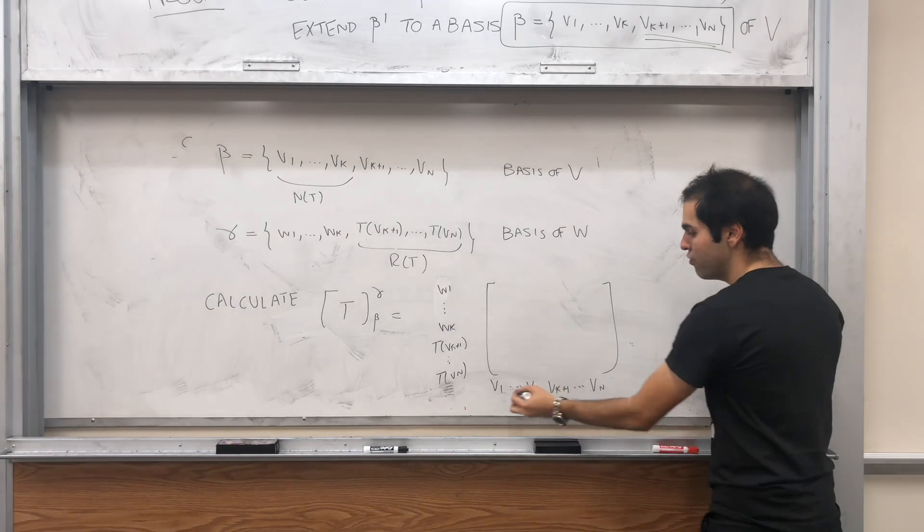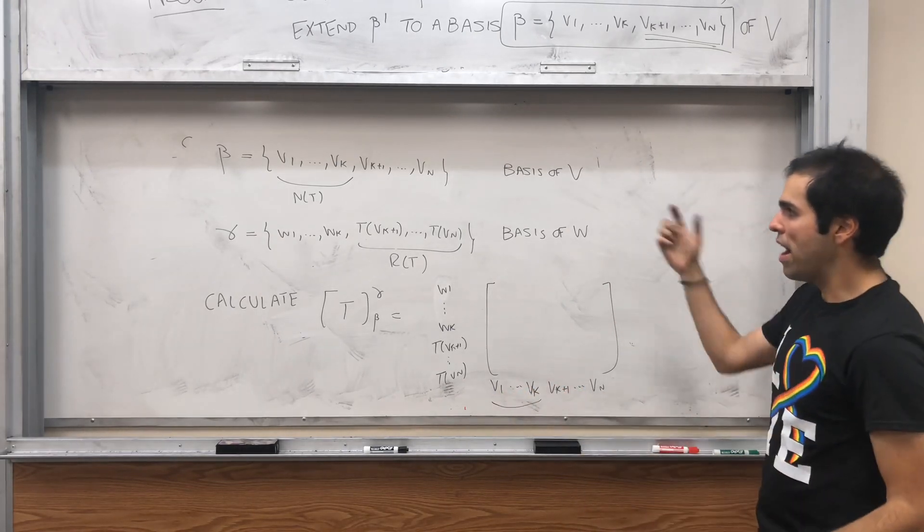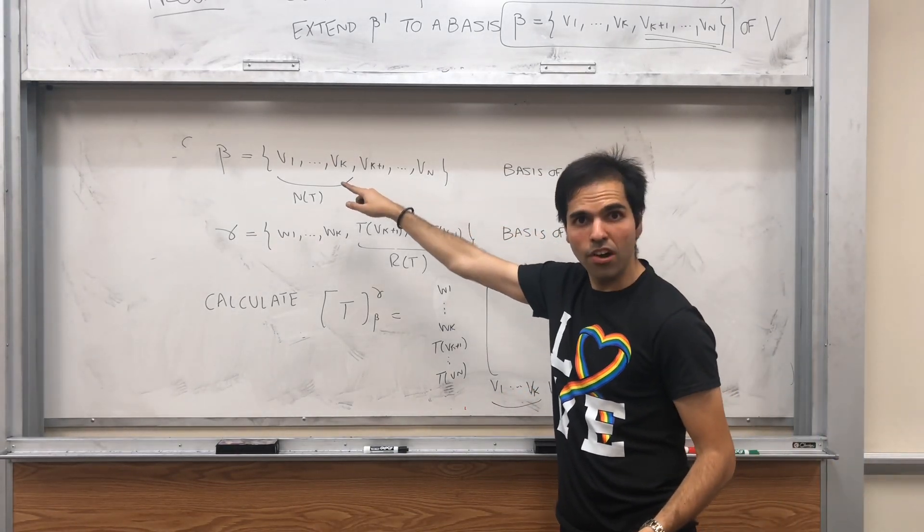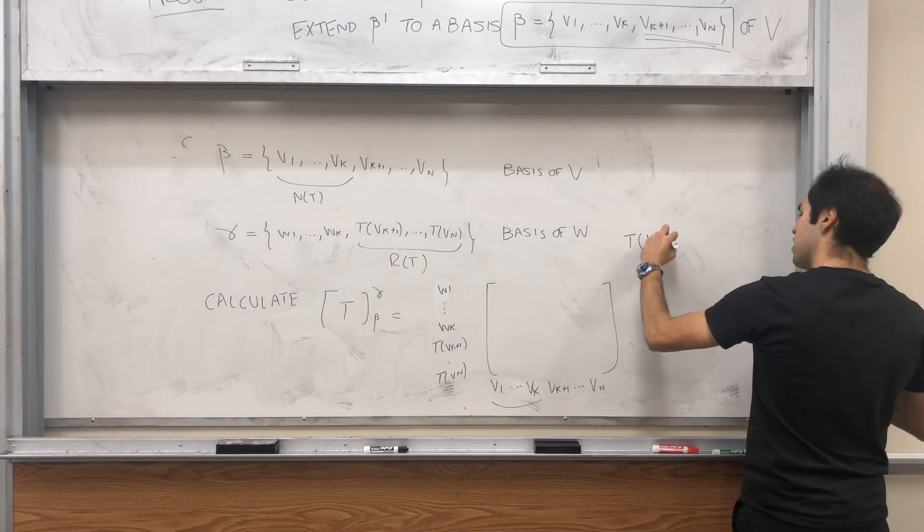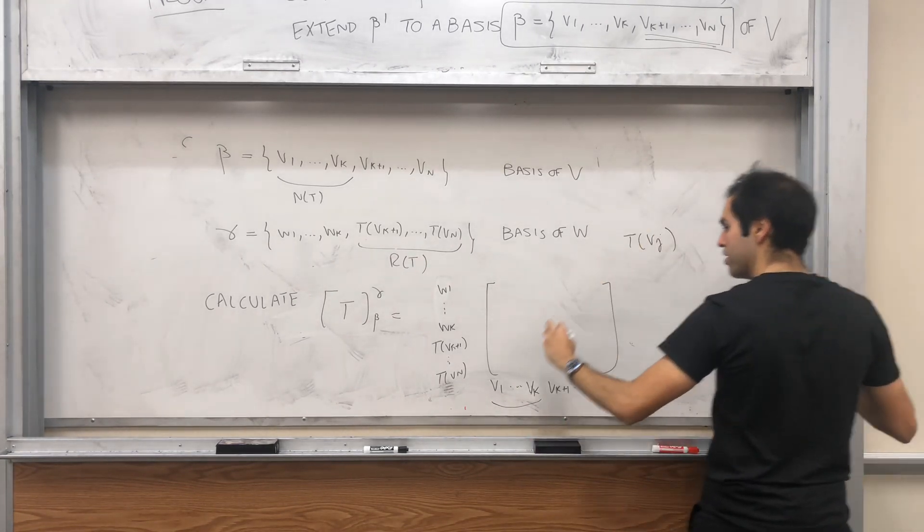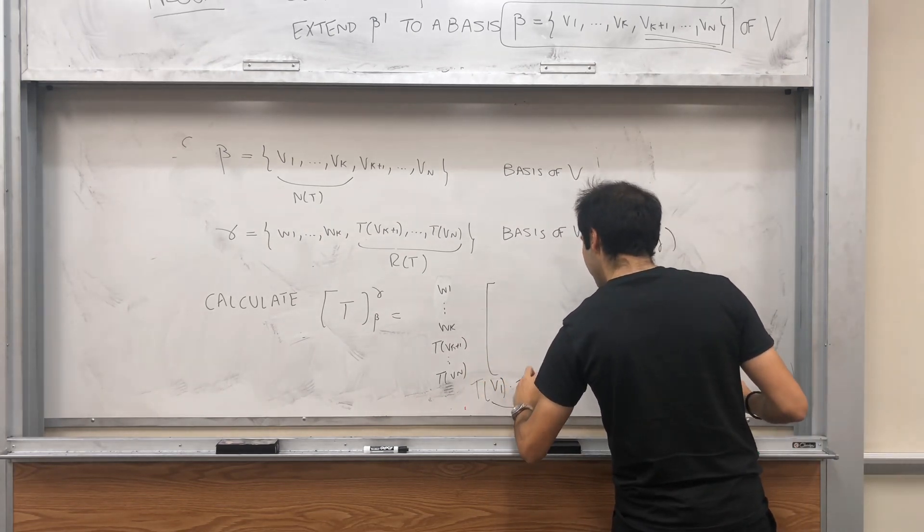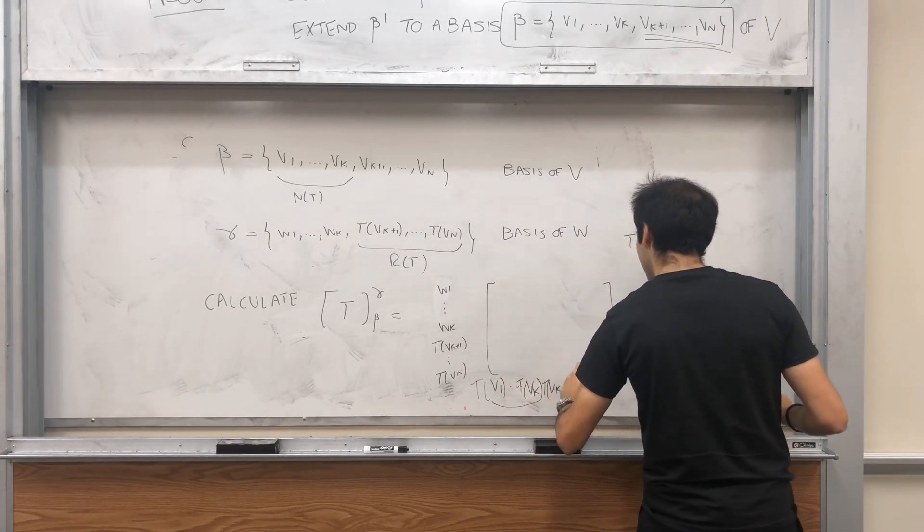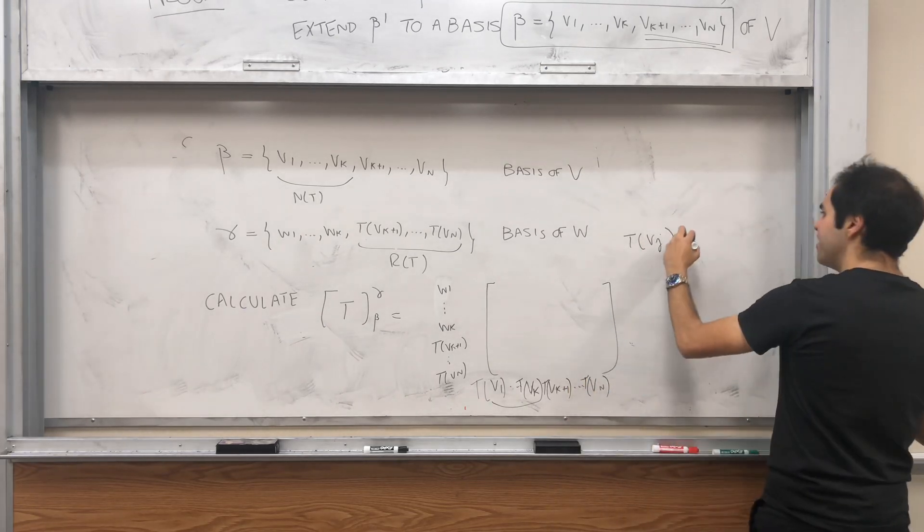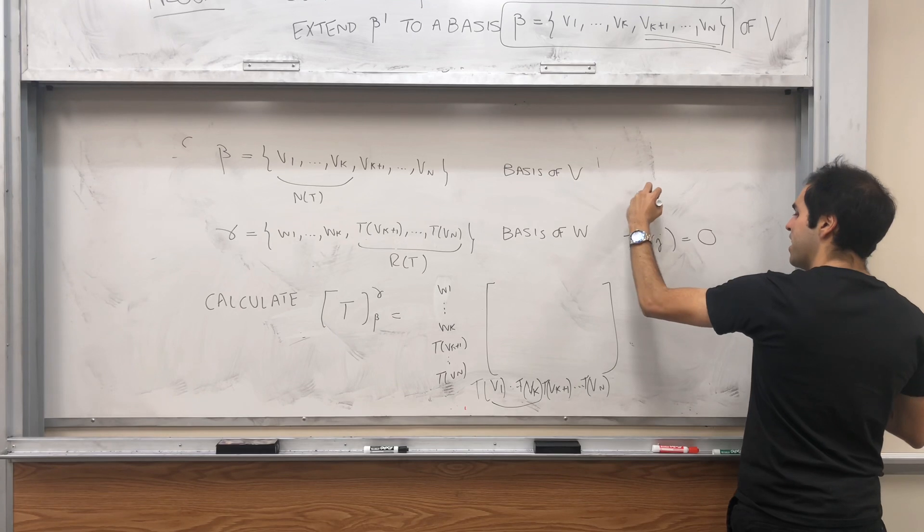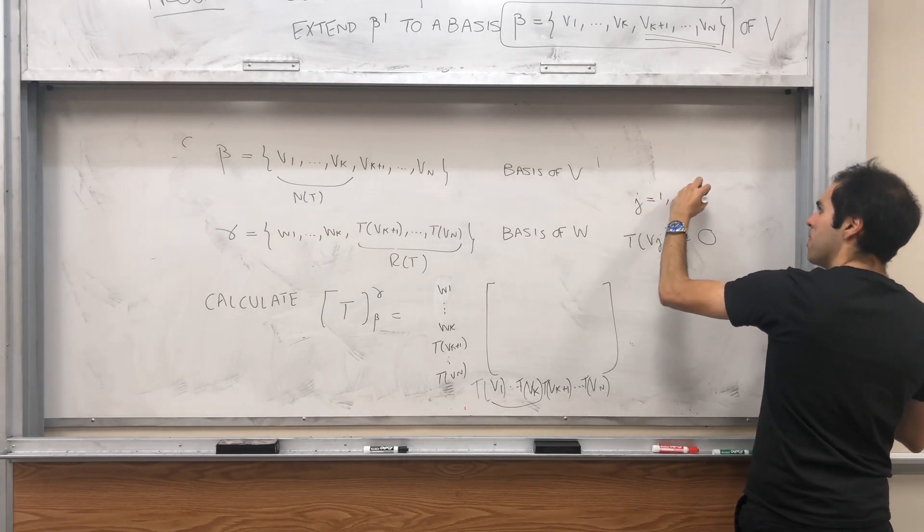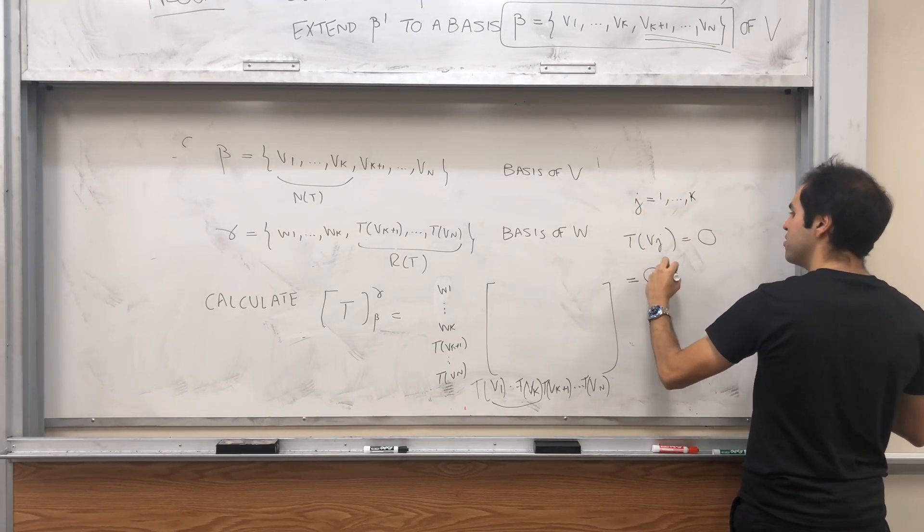All right, what about the first k vectors? Well, by definition of the null space, t of vj, and again, that's t of v1, t of vk, t of vk plus 1, t of vn. By definition, t of vj equals zero for j from one up to k by definition of the null space.